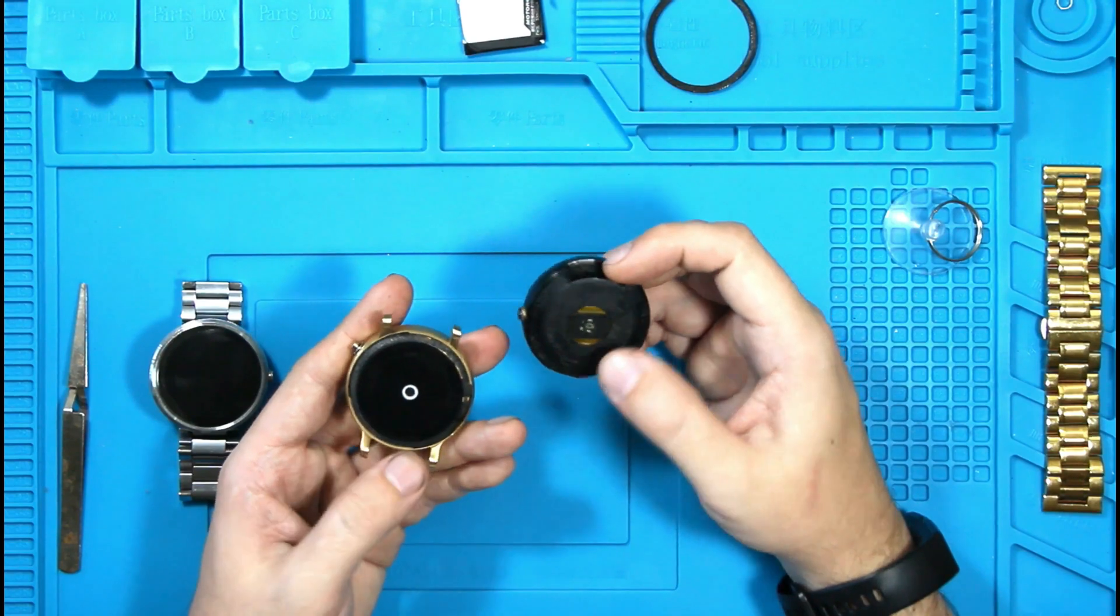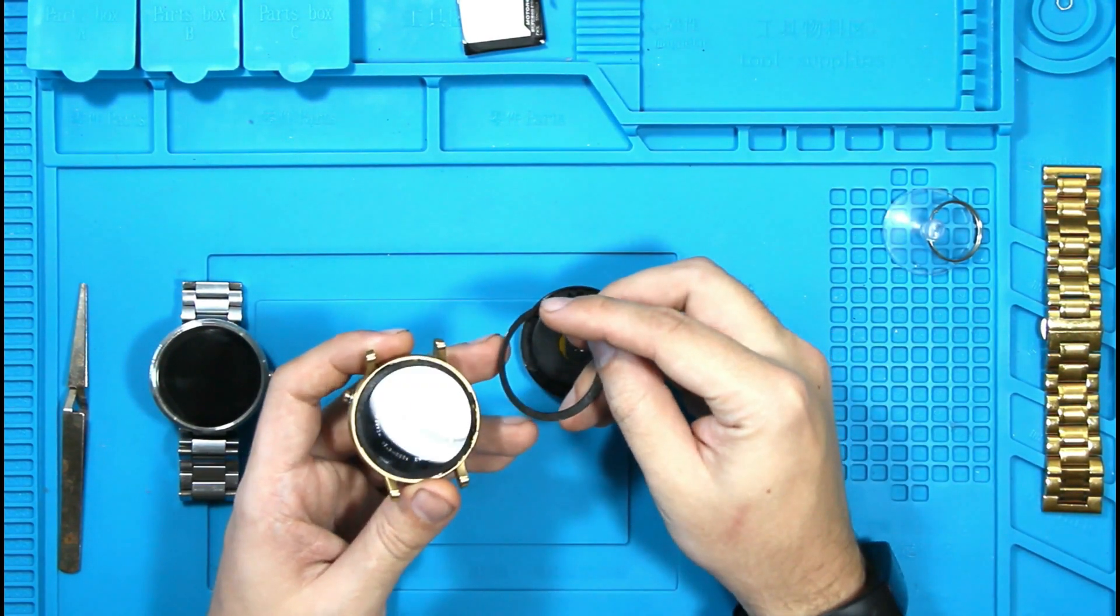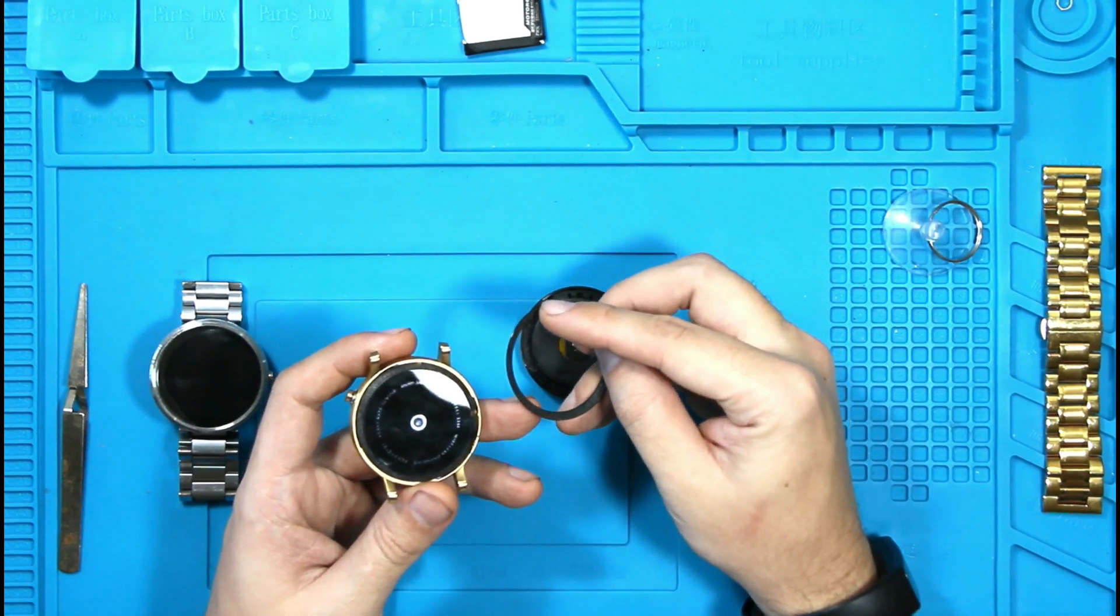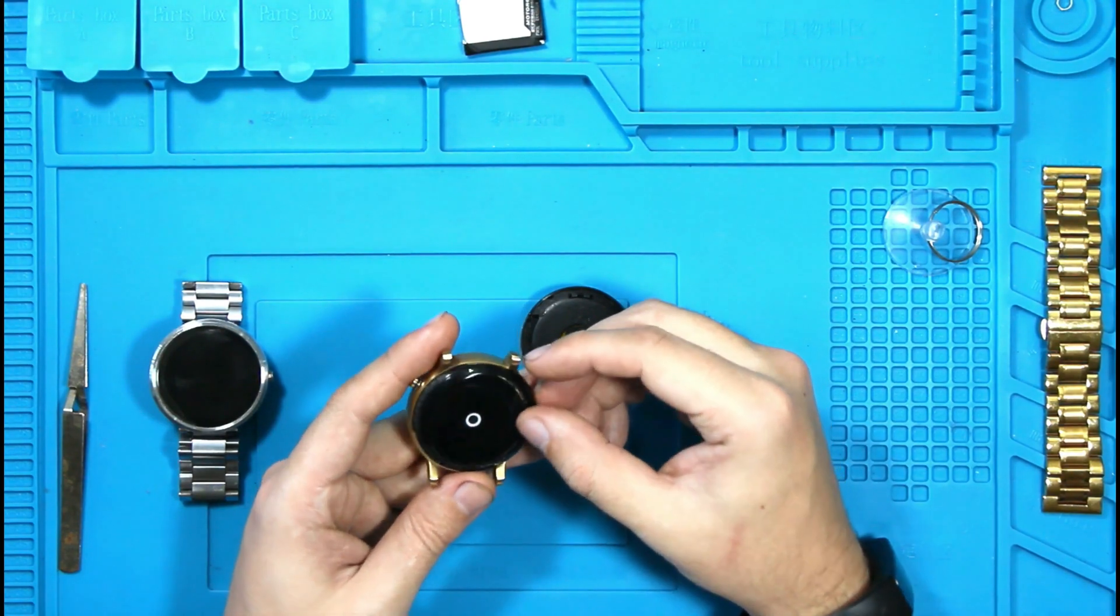On the second one, they actually fixed that and just the rim comes off. You still have to kind of tear it up to remove it. But you can just put some adhesive on this and it goes back. And it'll be okay.